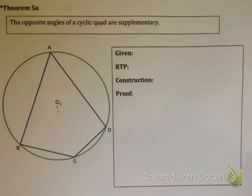Hi guys, we're now going to start proving Theorem 5. Theorem 5a has an asterisk next to it, which means the proof of Theorem 5a is examinable in a test or exam. Theorem 5a says the opposite angles of a cyclic quad are supplementary.